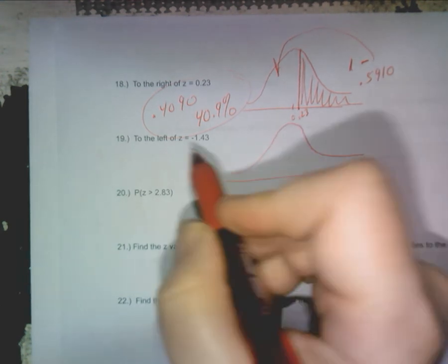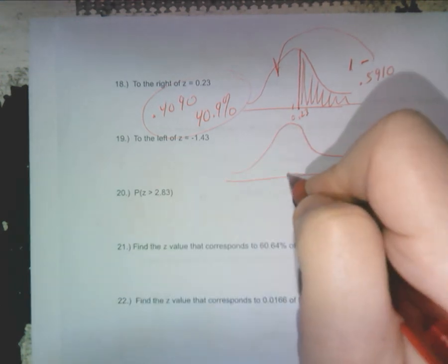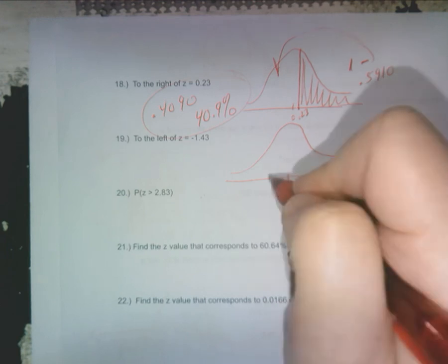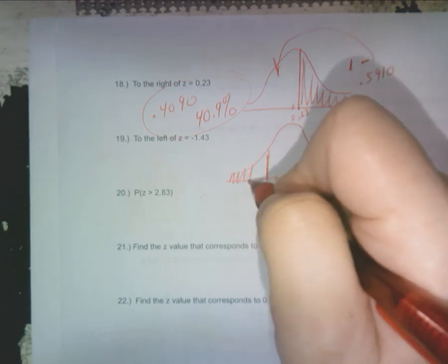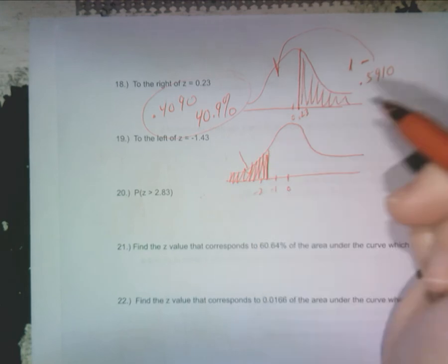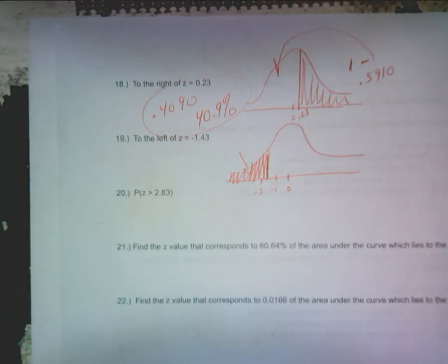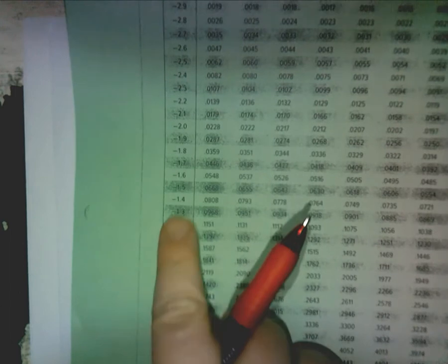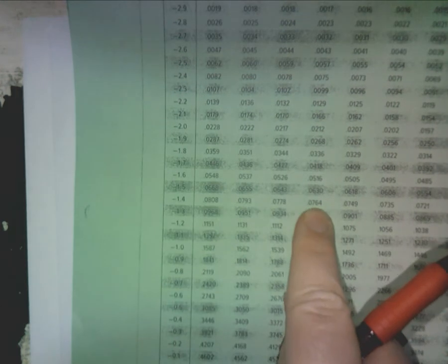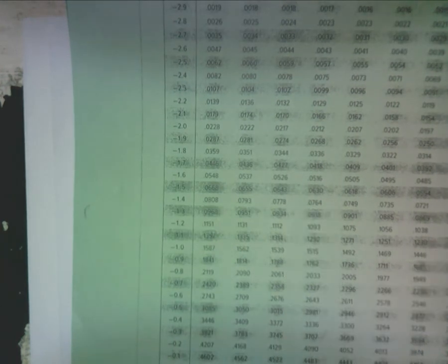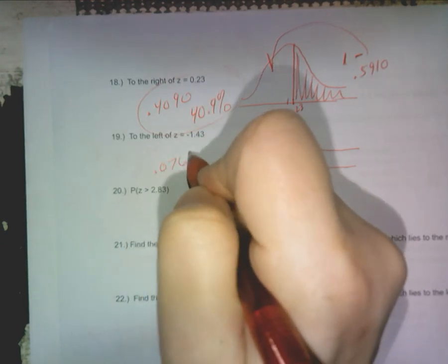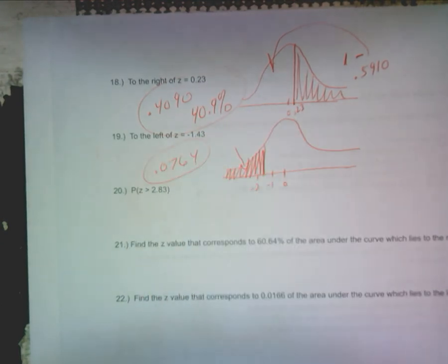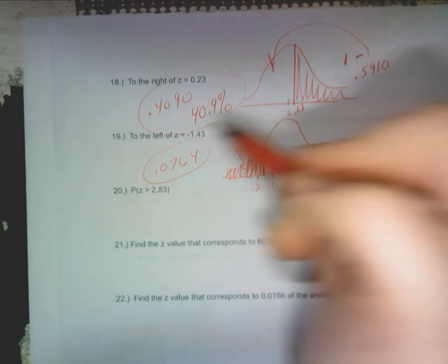Next one, draw your little probability to the left of negative 1.43. So here's negative one, here's like negative two, negative 1.43 to the left. That one's a nice one, that's right in our sheet. You literally just go to negative 1.43 and I got 0.0764, and that's your answer. You don't do anything in the left, done.